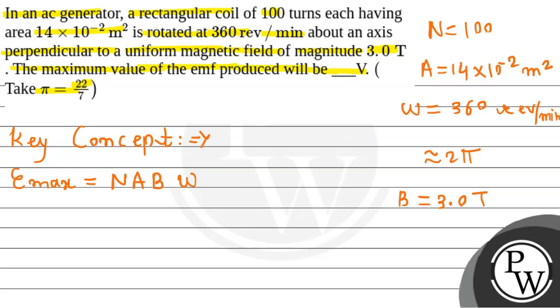This will be: number of turns 100, times area 14 into 10 to the power minus 2, times magnitude of magnetic field 3, times ω. Basically 360 revolutions per minute needs to be converted to radians per second, so we multiply by 2π and divide by 60.